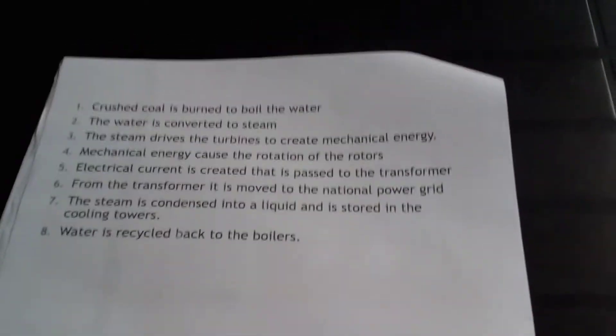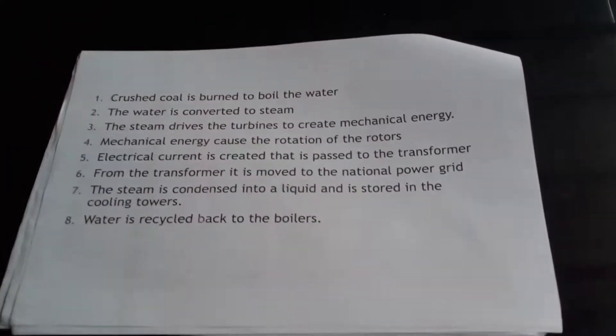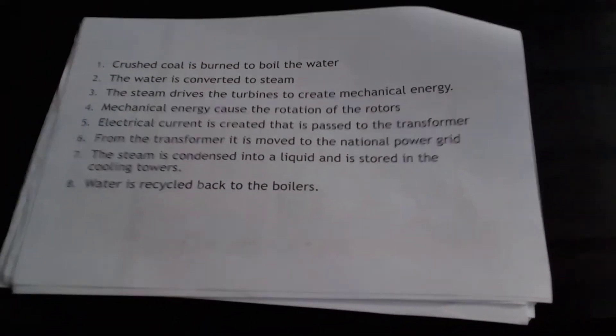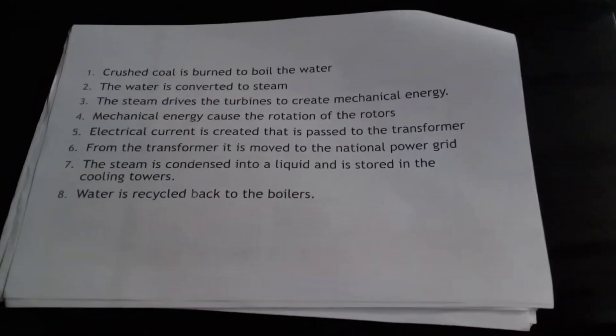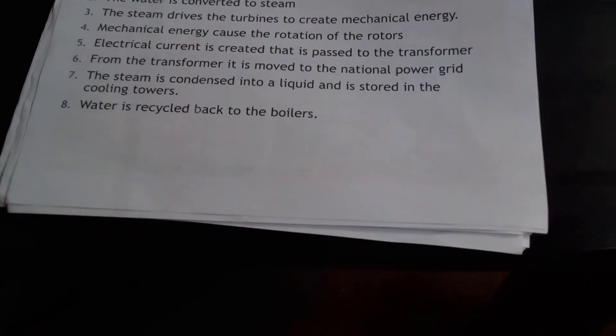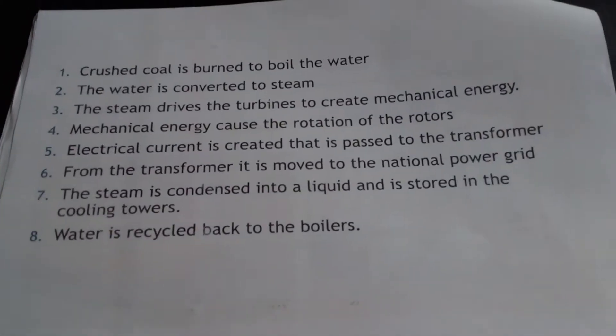The mechanical energy causes rotation of the rotors, and electrical current is created. That current is passed to a transformer, and from the transformer it is fed to the national power grid. The steam is then condensed into liquid and stored in the cooling towers, and the water is recycled back to the boiler. That's how coal generates electricity for us.